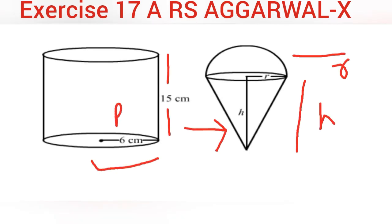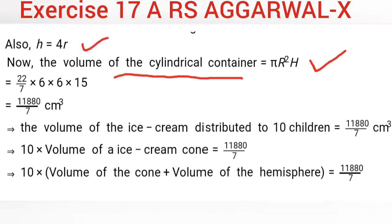Capital R is the radius and capital H is the height of the cylinder, while small r and small h are used for the cone. Using the formula πR²H, we get: π × 6² × 15 = (22/7) × 36 × 15 = 11880/7. We keep 7 in the denominator for now.